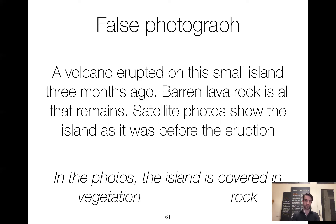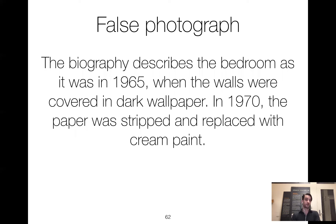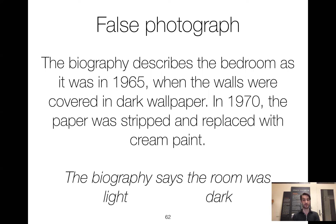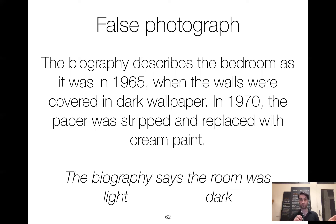Here's one more false photograph example: 'The biography describes the bedroom as it was in 1965 when the walls were covered in dark wallpaper. In 1970, the paper was stripped and replaced with cream paint. The biography says the room was light or dark.' You would say the biography says the room is dark, even though it actually is light. So the contrast you would do is false belief stories versus false photograph stories.